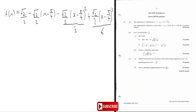I don't like how this looks with so many fractions. Root two over two divided by two can be rewritten as root two over four. Root two over two divided by six can be rewritten as root two over twelve. That looks easier to understand.